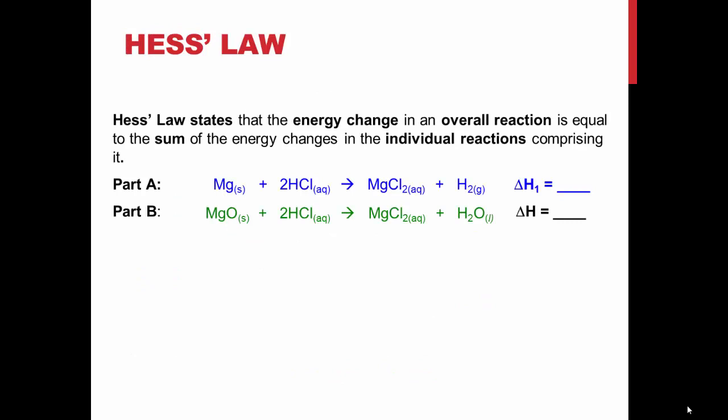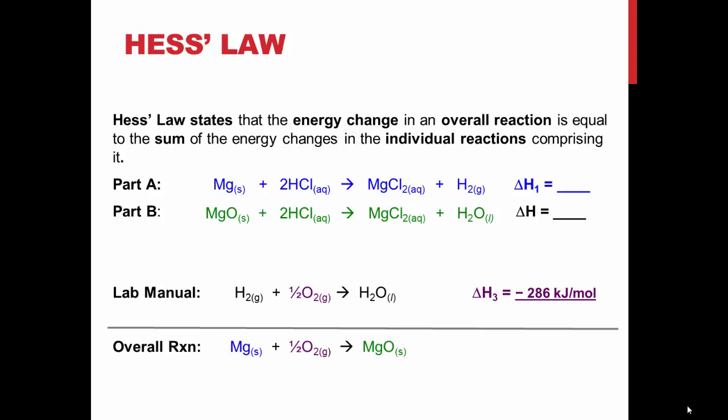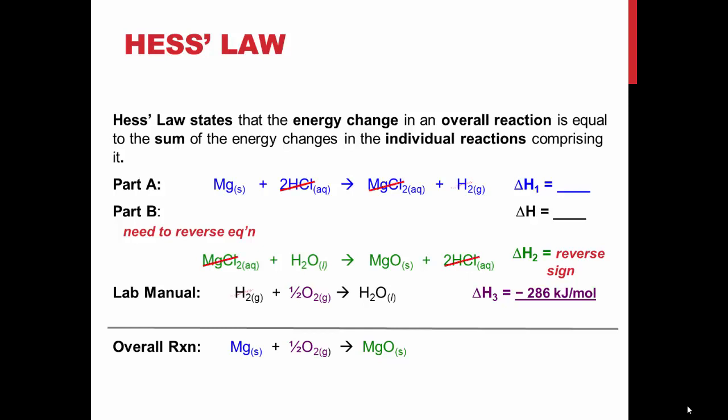By reversing the reaction that is performed in Part B and adding the formation of water from hydrogen and oxygen gases in the lab manual gives us the overall reaction we are looking for. According to Hess's law, the separate reaction enthalpy changes can be summed to get the enthalpy of the overall reaction. Now because the Part B reaction is being reversed, the sign of the enthalpy change is being reversed.